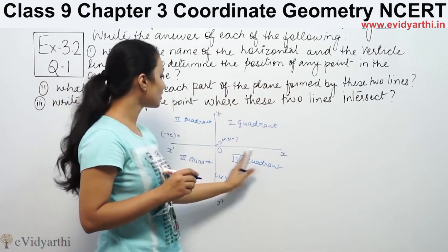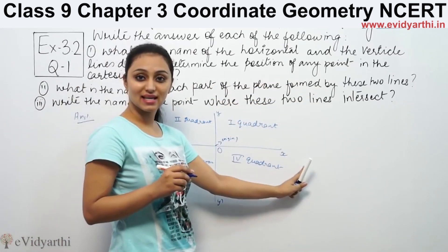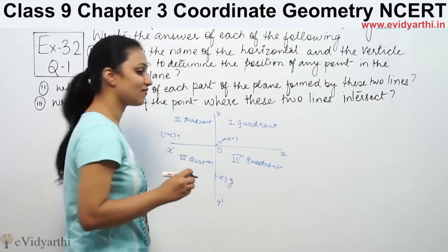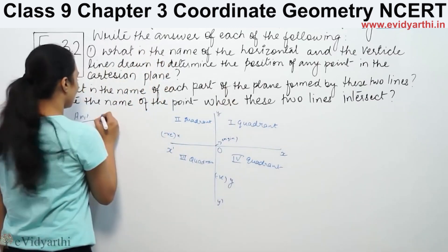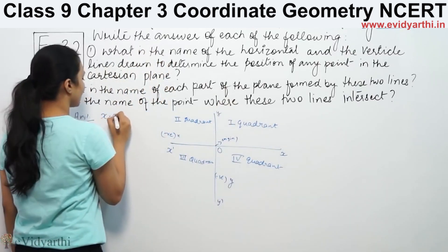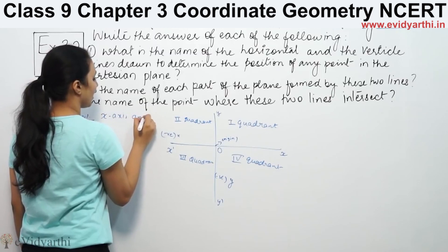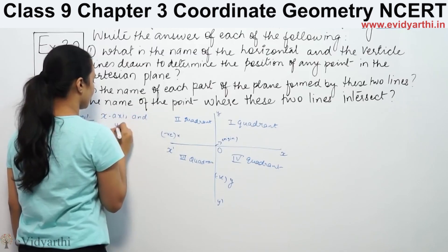What do we call the horizontal line? We call the horizontal line the x-axis. We call the vertical line the y-axis. So the two axes are the x-axis and y-axis.